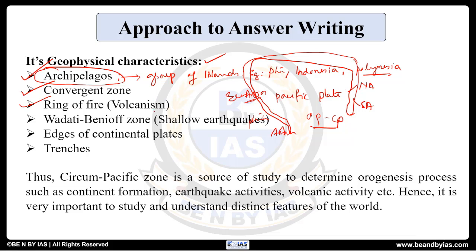Then there is the Ring of Fire — very frequent volcanism occurs here as a result of this convergence, and it is tectonically very active. As a result, two-thirds of the volcanoes in the world are found here. You also need to give examples, such as Mayon or Mount Krakatoa — all of these are examples. Then the Wadati-Benioff Zone — because of the tectonic activity and convergence, there are very shallow focus earthquakes here, and this particular zone is called the Wadati-Benioff Zone.